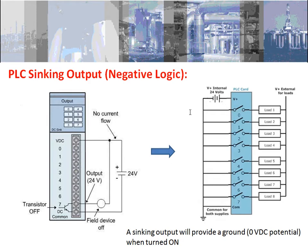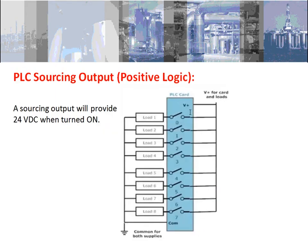PLC sinking output is of negative logic. When the transistor is off — meaning the device is also off — if you measure the voltage at the output terminal it is 24 volts, that is logic high. When the transistor is on, the device will be on, and if you measure the voltage at the output terminal it is logic low. So PLC sinking output is of negative logic.